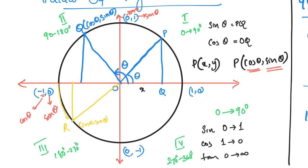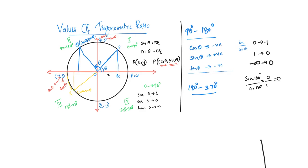So what we can understand is both cos theta as well as sin theta are negative. Cos theta is negative, sin theta is negative — from 180 degrees to 270 degrees, sin theta is negative. What is tan theta? Tan theta is positive, because it is negative divided by negative. Sin theta by cos theta: negative over negative gives a positive tan theta.